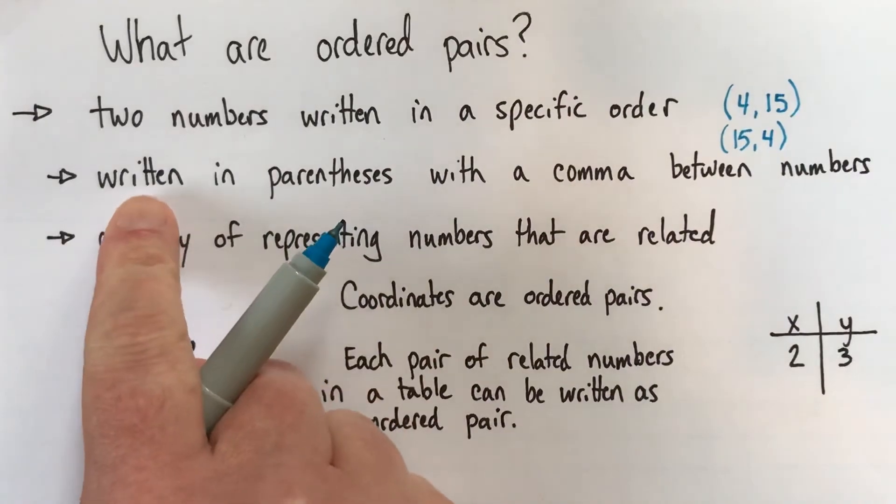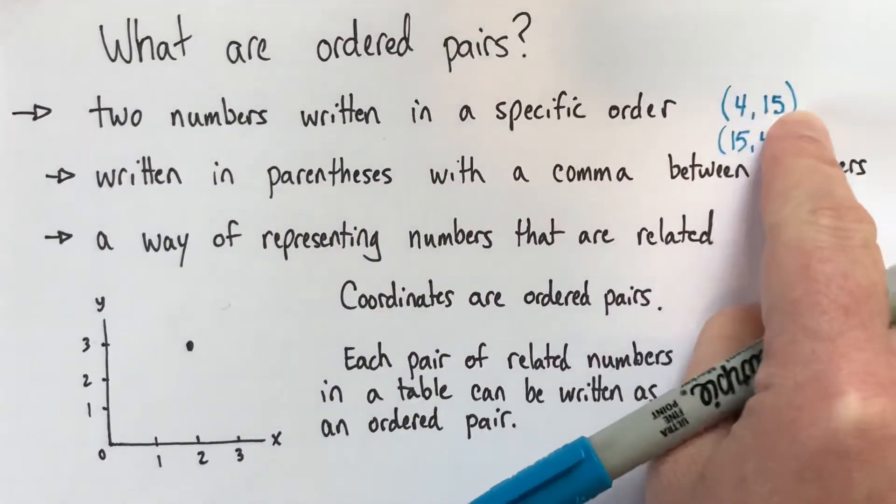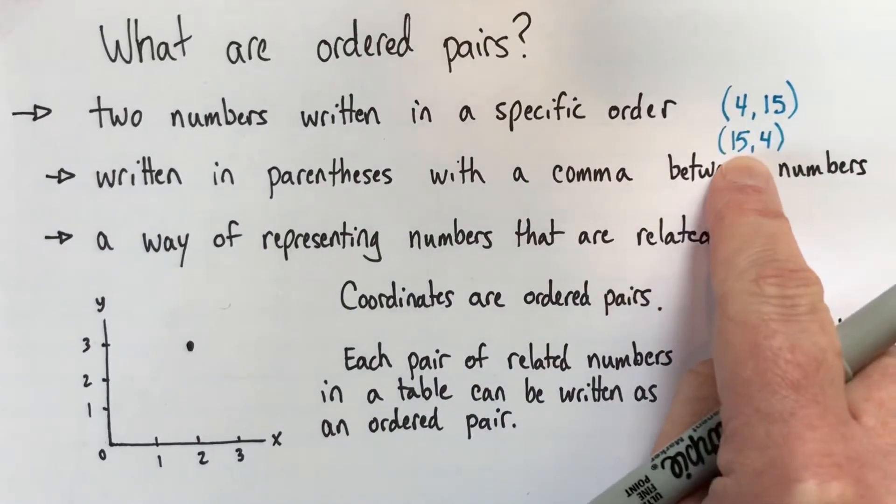Alright, so you saw an example of this already. They're written in parentheses, sometimes people call that brackets, and there's a comma in between the two numbers.